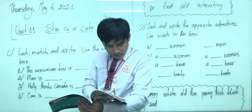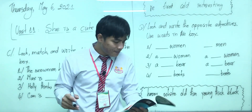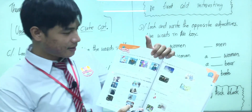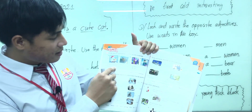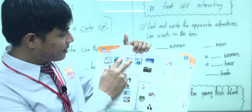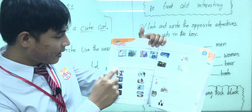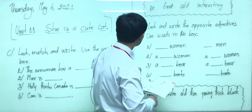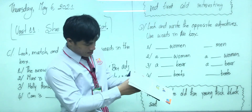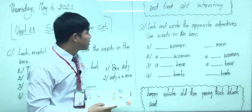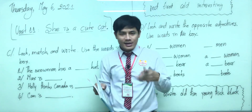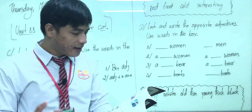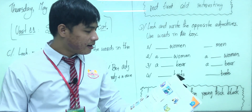Now let's take a look at page 50 together and do the first exercise. To do this, you are required to look at the picture, match the picture with the number of the statement, and use the words in the box to complete the blanks. Here is the box — this is red. Now let's start doing this together. Let's take a look at picture one — picture A. What is this? The snowman...